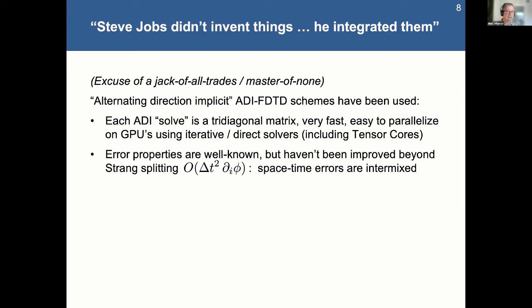And one of the things about these is that the string splitting, if people know what that is, that's when you do this multiplicative X direction, then Y direction, then Z direction, and then reverse it across the two sets of E field and B field variables in the Maxwell's equations. So the space-time errors are really intermixed, but you can get it up to second-order accuracy, but the errors are proportional to the gradients. So it's really painful.